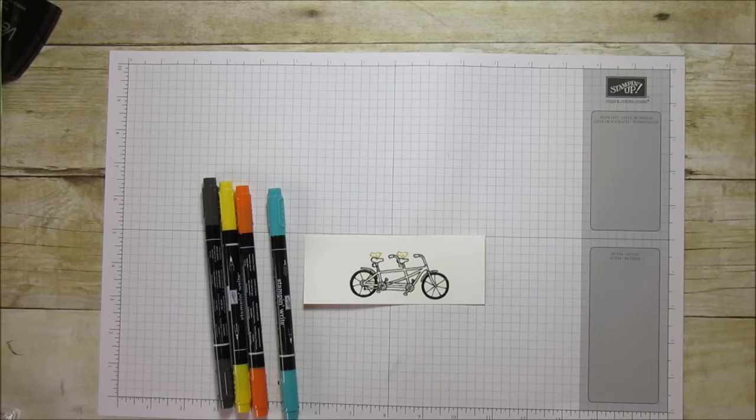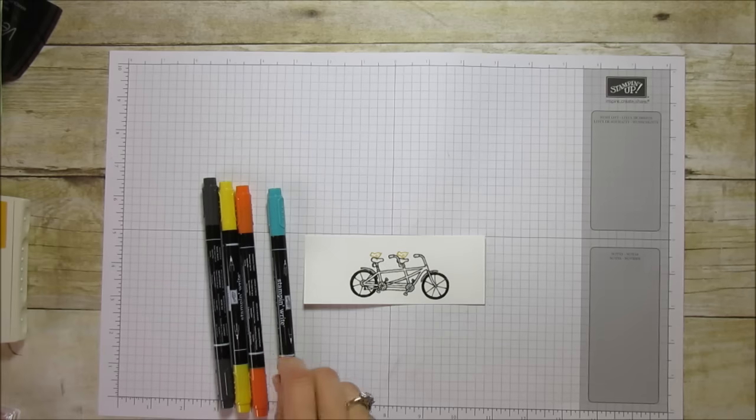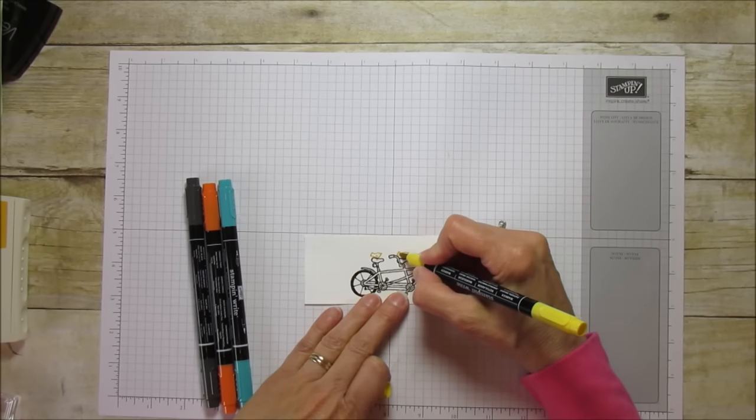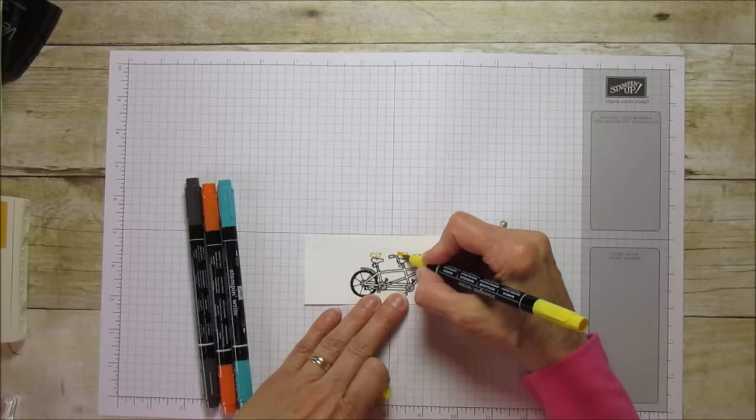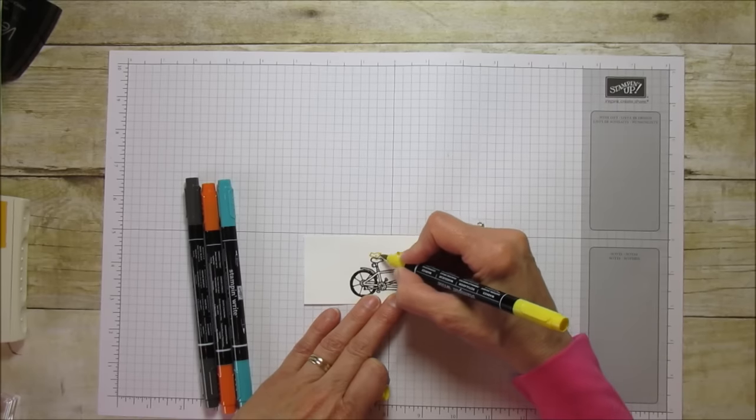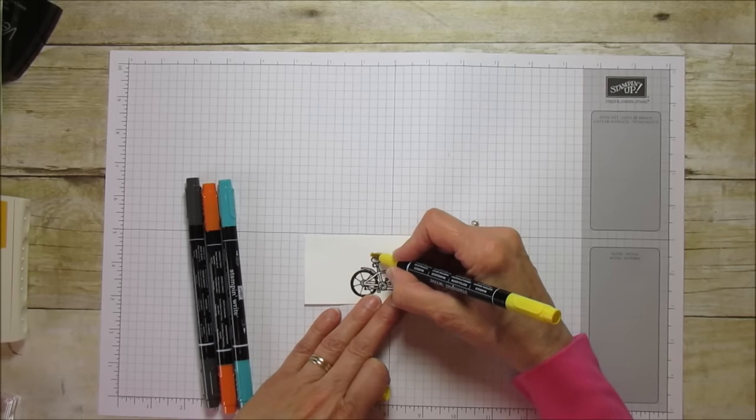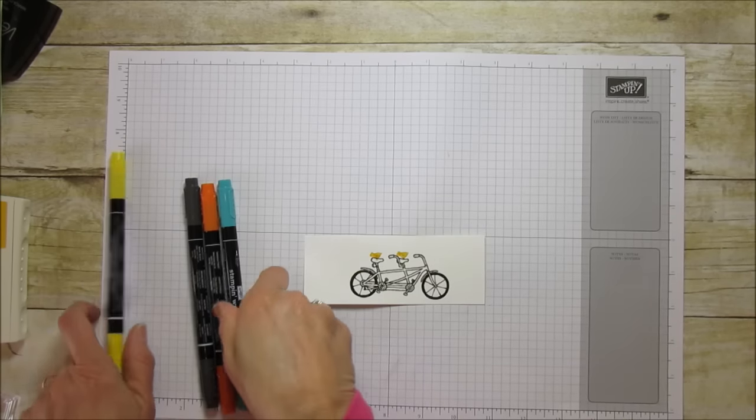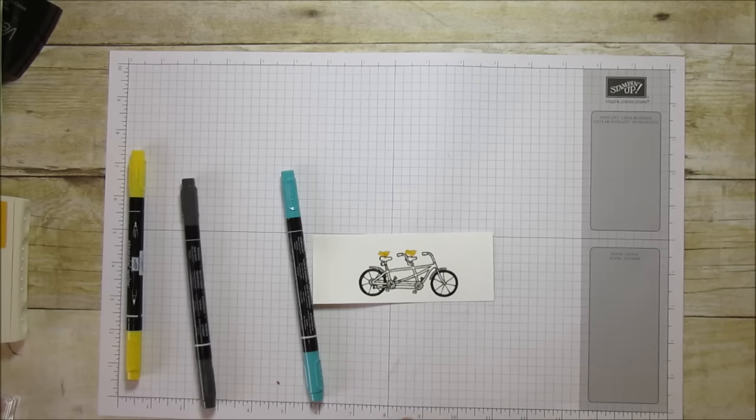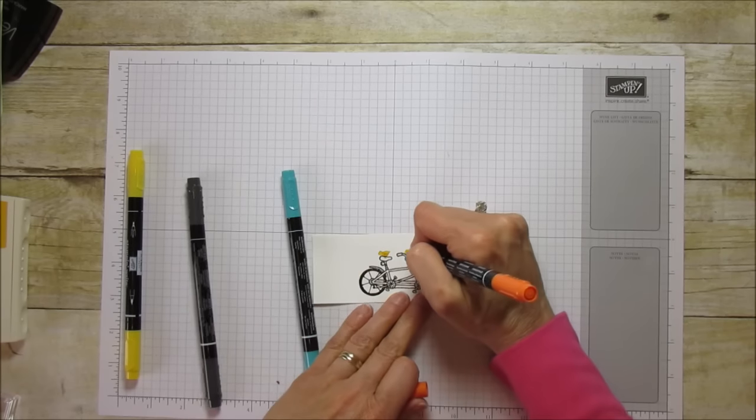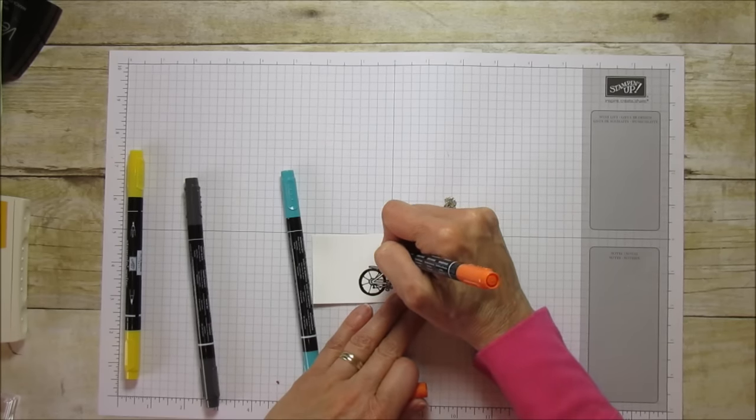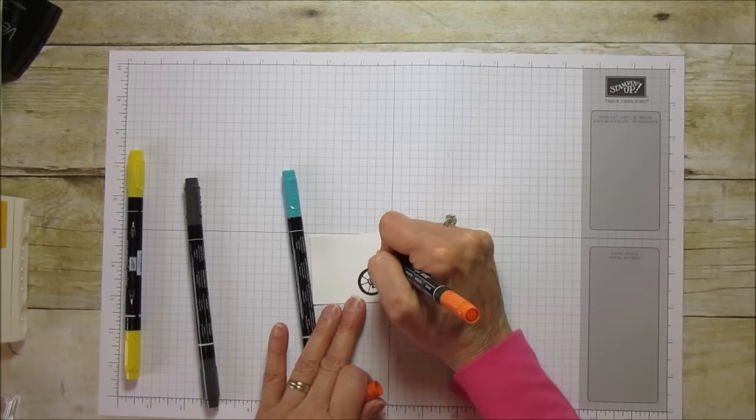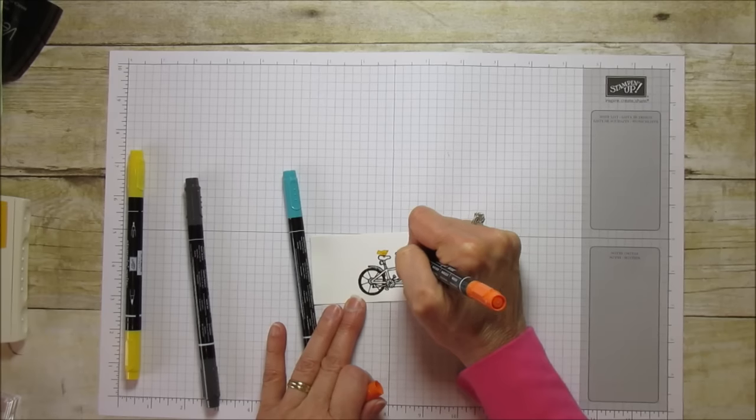He's so cute. Then I'm going to use the markers to color him in. I'll color them with Daffodil Delight - it's a little bit lighter. Then I'll use Tangelo Twist for their little beaks. They are so cute. I think I'll make their feet the same.